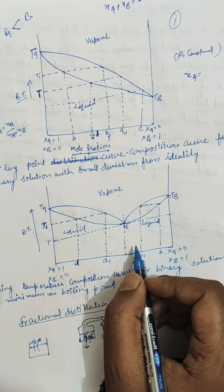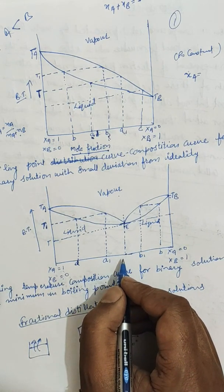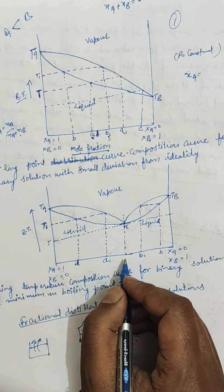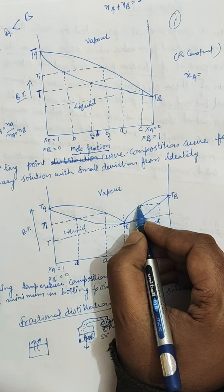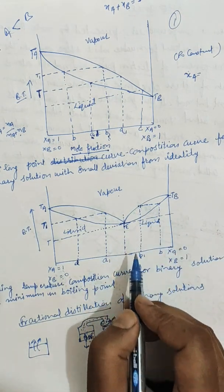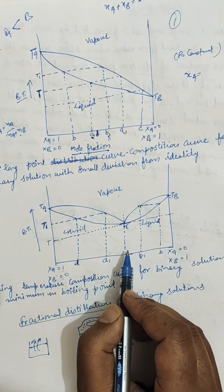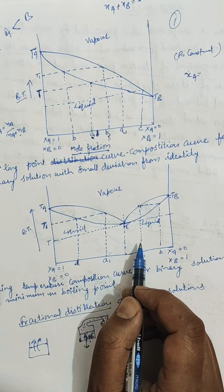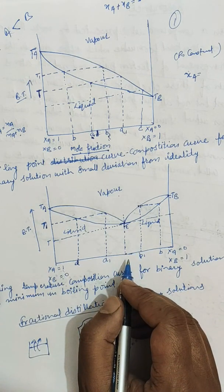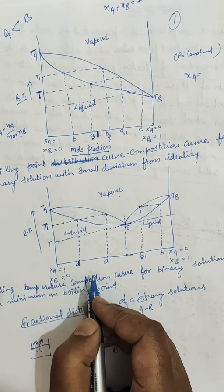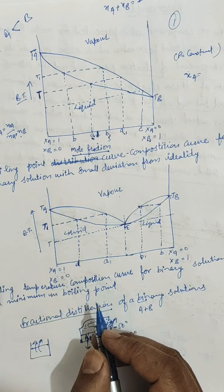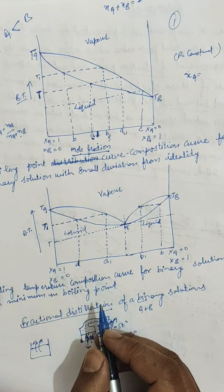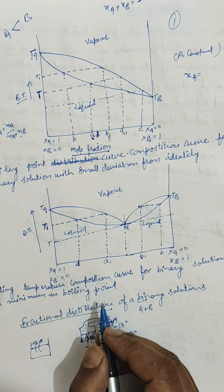On the other hand, if a liquid having composition B is distilled, the distillate first obtained will have composition B1. The vapor phase will be richer in the constant boiling mixture and the residue liquid will contain more of liquid B. On continuous distillation, the vapor phase keeps becoming richer in the constant boiling mixture until point E is reached, when the azeotropic mixture is obtained as distillate and the residue liquid contains pure component B. We cannot obtain pure component A this way. The water-ethanol system forms a minimum boiling azeotrope at 351.1 Kelvin.